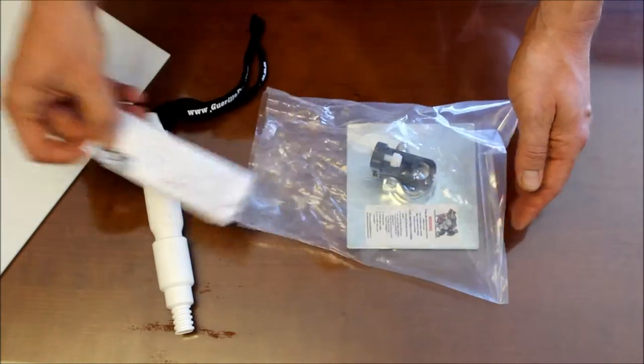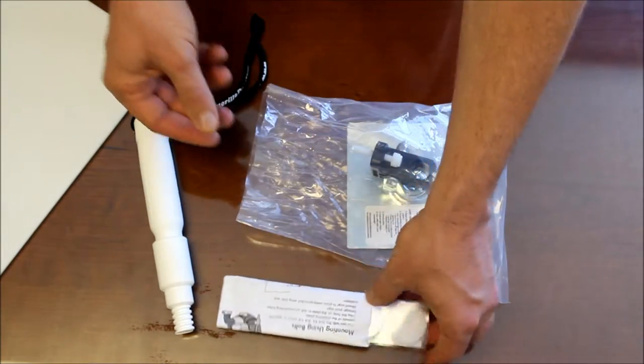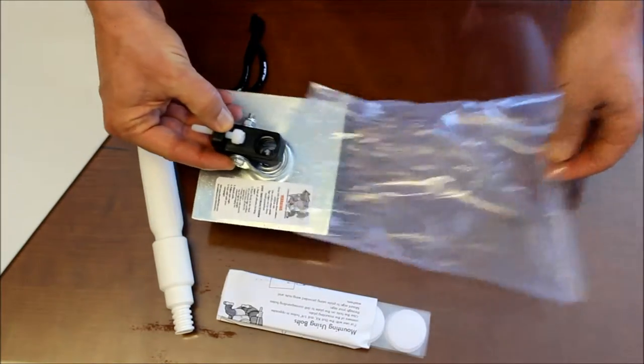Inside of the bag, we've got our instructions. Folded inside your instructions are going to be your Velcro pieces you can use if you'd like, and then the spinner head unit itself.